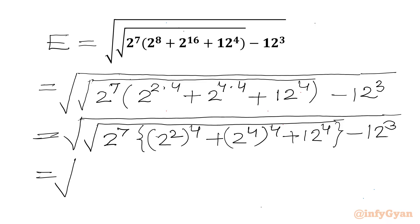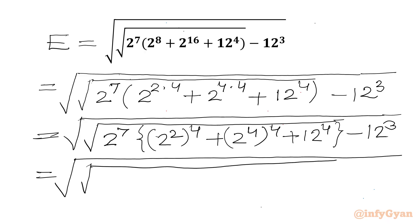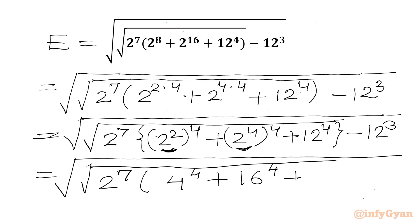This will be equal to square root of square root of square root of 2 power 7. In the bracket: 2 squared is 4, 2 power 4 is 16. So I will write 4 power 4, plus 16 power 4, plus 12 power 4, and then minus 12 cube. Now I will use substitutions.